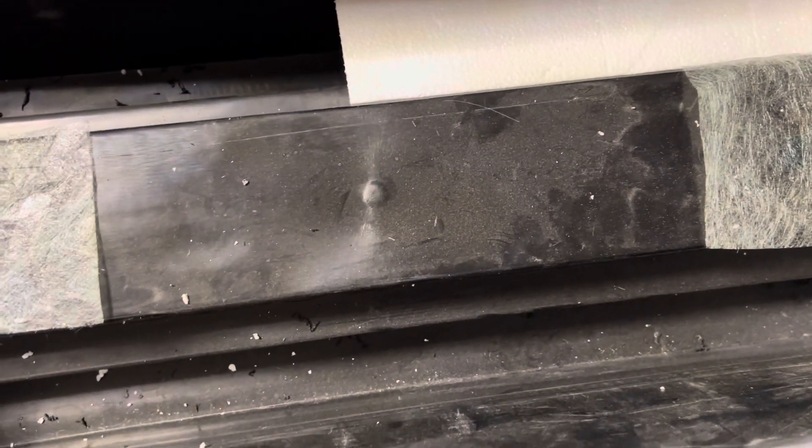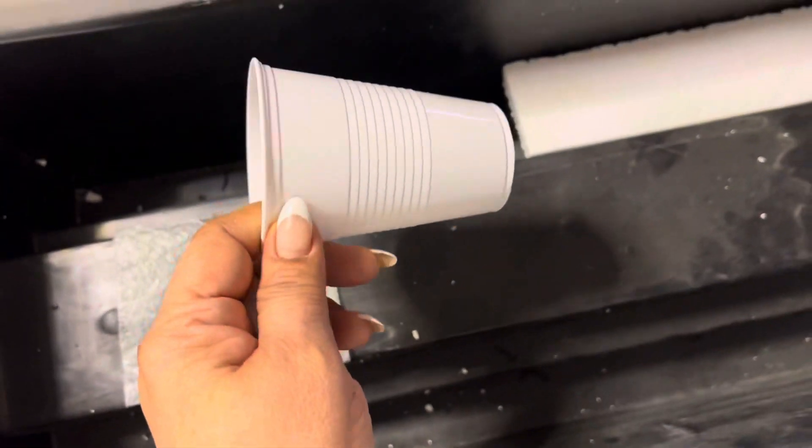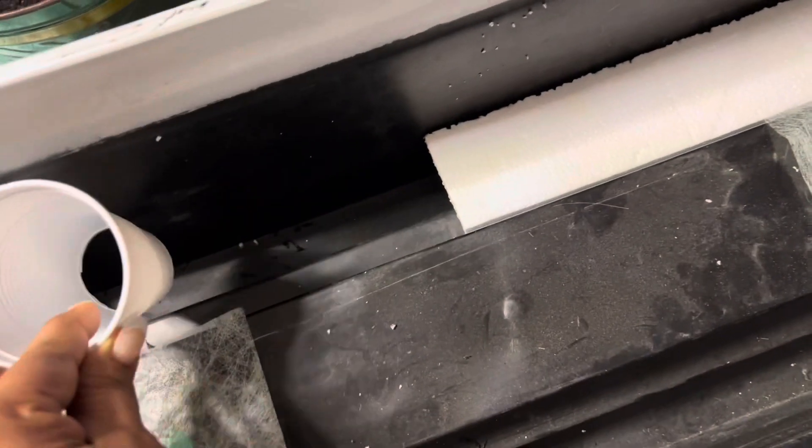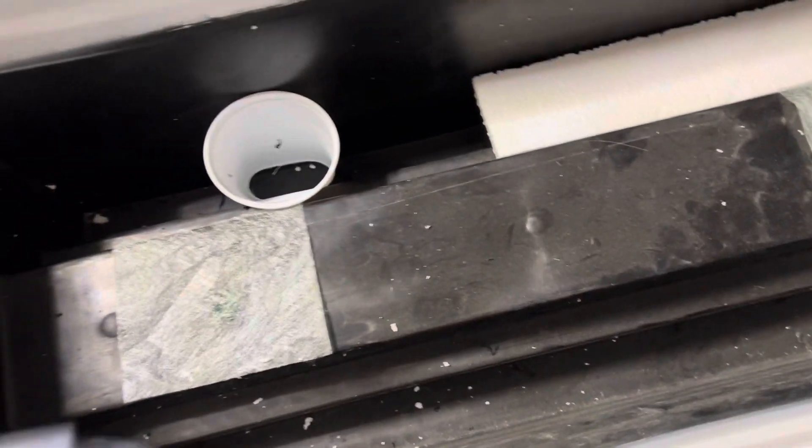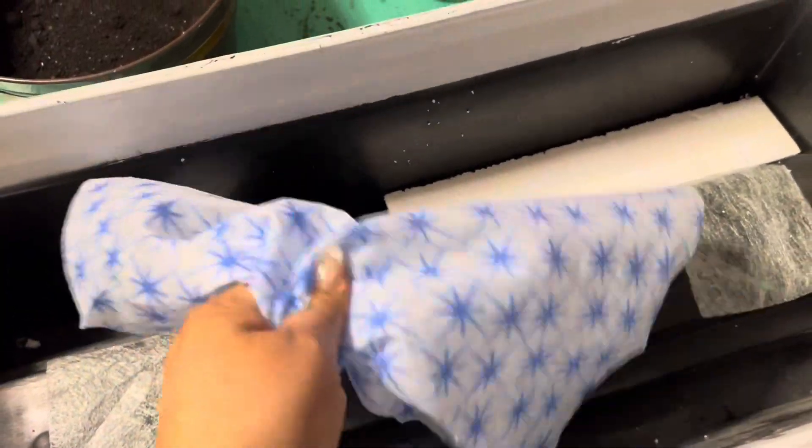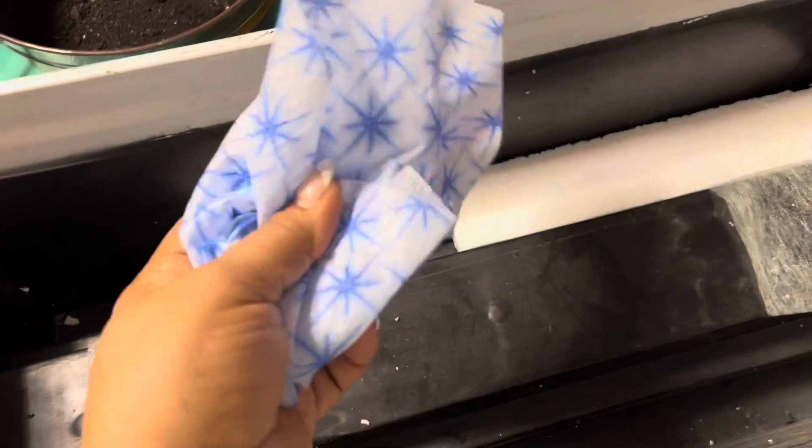Then I took a regular 12 ounce plastic cup, cut the bottom off of it. I'm gonna put it about right there. I took one of those Dollar Tree dishcloth things, one of those disposable rags.